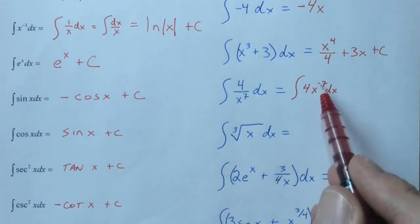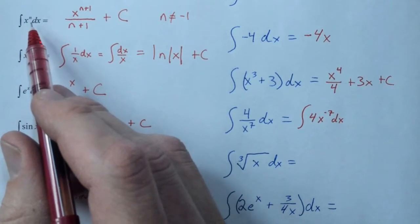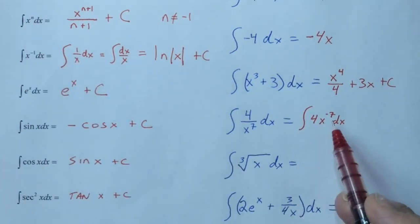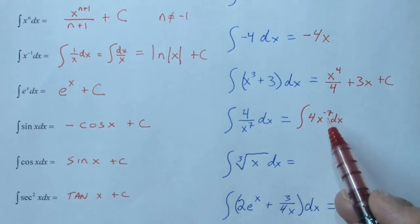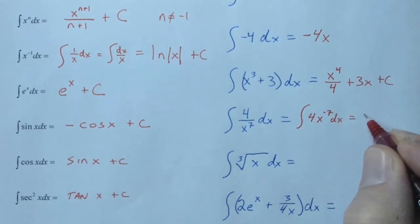Now, just because the exponent is negative, doesn't mean we can't use our x to the n rule. The only one that can't be done is x to the negative 1. This is x to the negative 7. So even though we have negative exponents, we're still good. So what happens? Well, the 4 is a coefficient, so it's part of our answer.